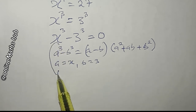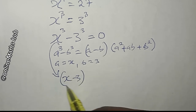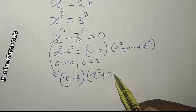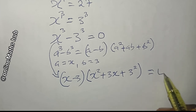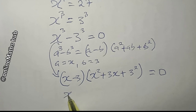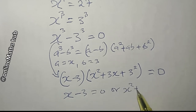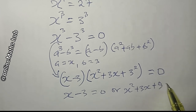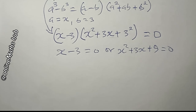The equation now becomes (x minus 3) multiplied by (x² + 3x + 9) equals zero. Applying the zero product rule, either x minus 3 equals zero, or x² + 3x + 9 equals zero.